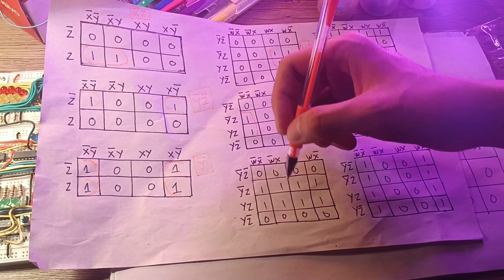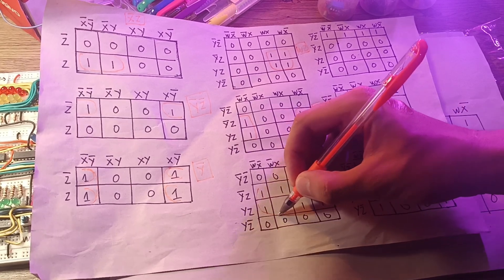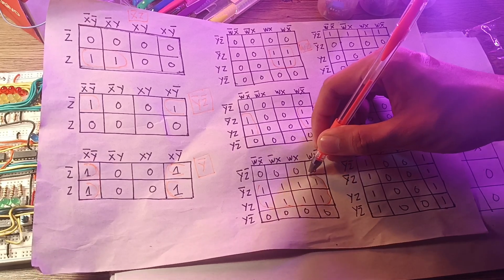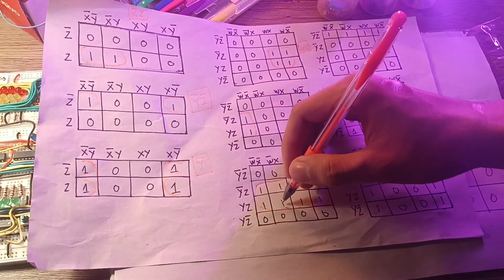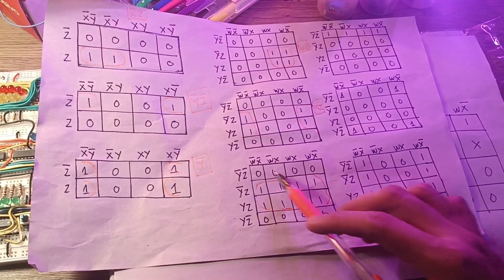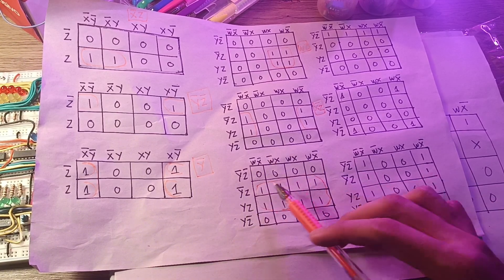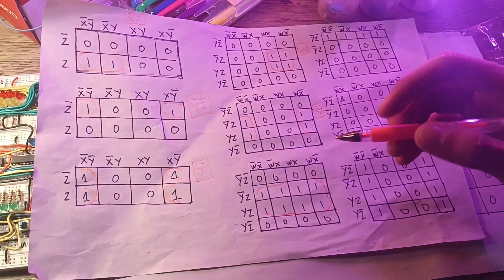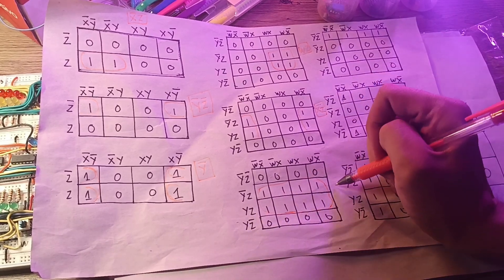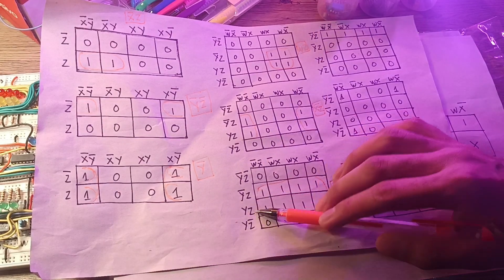This next example is a special case. We group all cells together, but we can never find a similar column variable. What we do here is find the similar in the row, which is z. So the answer is just z — there is no similar column variable, but we have a similar row variable.